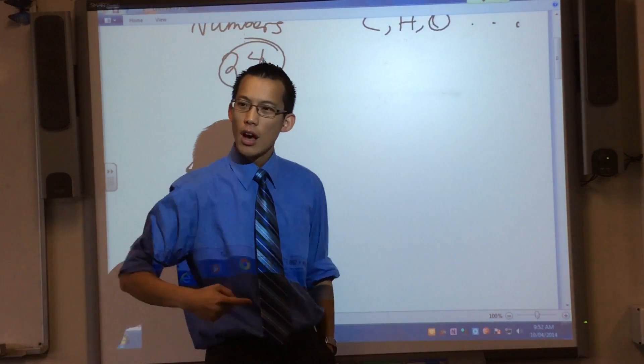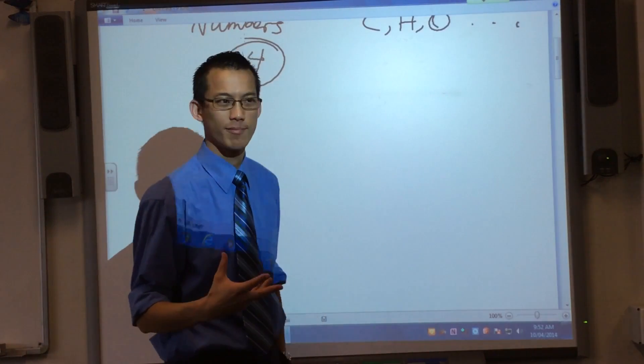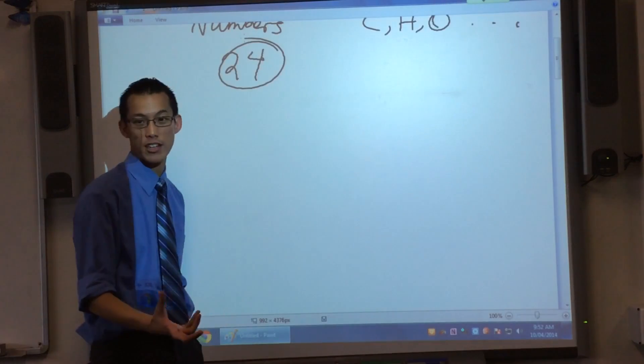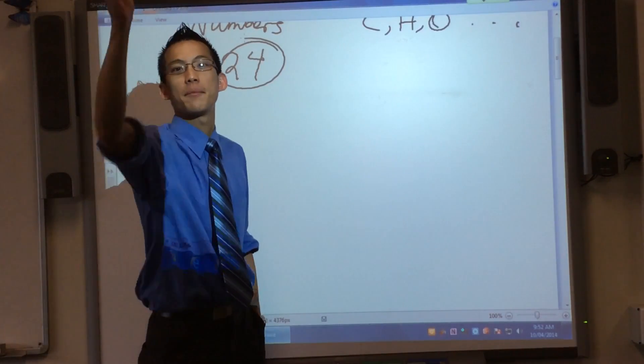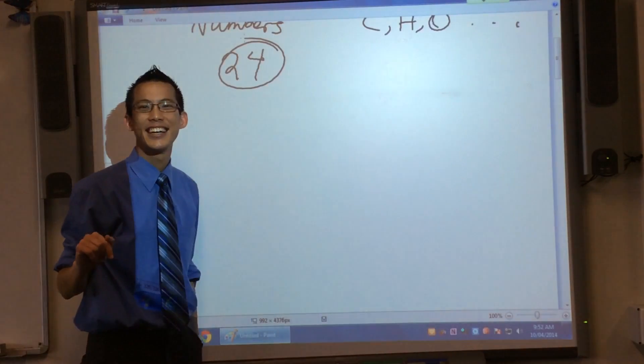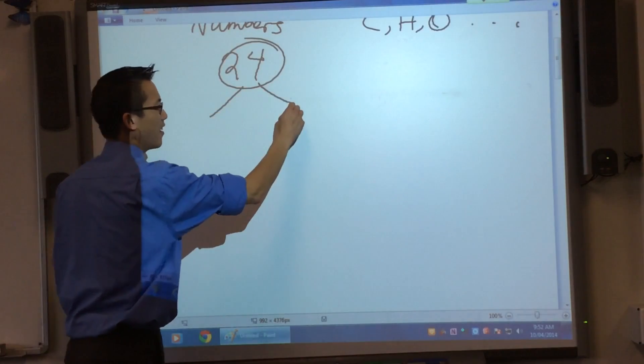So how do I do a prime factorization on this thing? How do I draw a factor tree? First step, you guys know this. You just draw two lines.